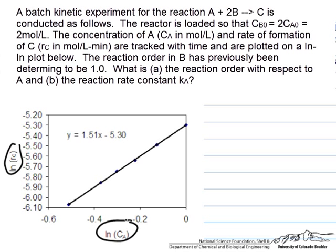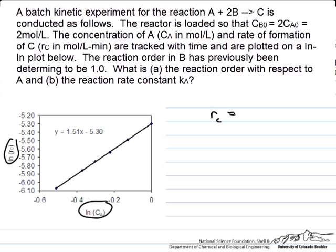First, we set up the material balance. We postulate a power rate law where the rate of formation of C equals Ka times the concentration of A times the concentration of B, each raised to different powers. The concentration of A is raised to the alpha power that we're solving for, and the concentration of B is raised to the first order, because the problem states the reaction order in B has previously been determined to be 1.0.